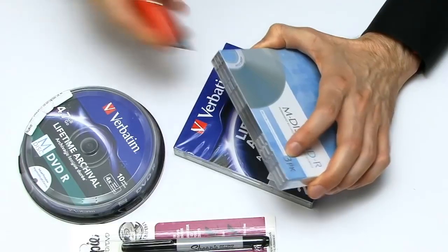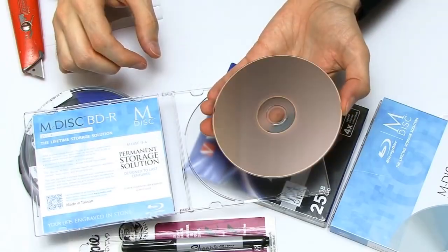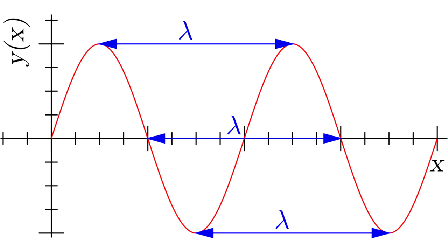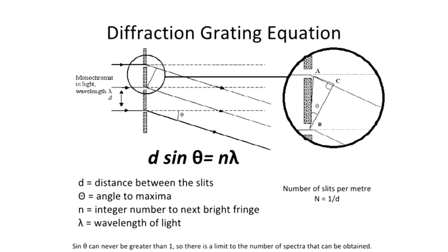Hi, it's time to test if a CD can be used as a diffraction grating and measure the wavelengths of the laser pointer and diffraction grating constant by using basic equations.